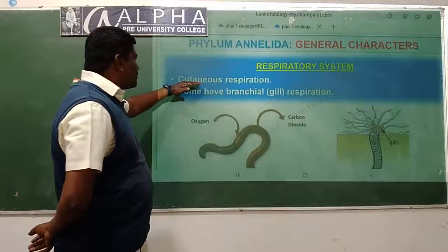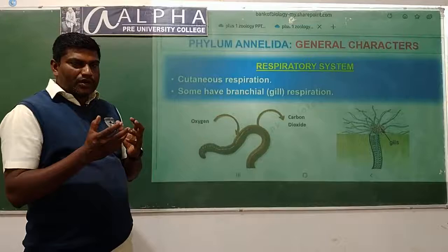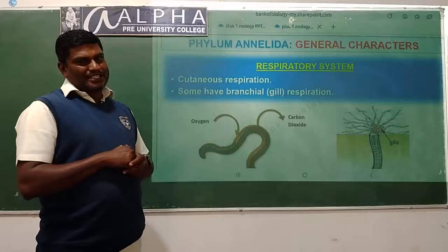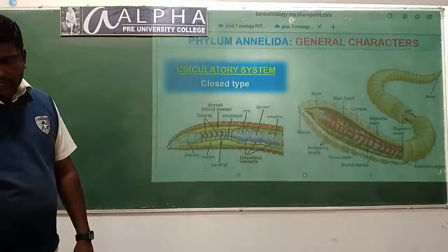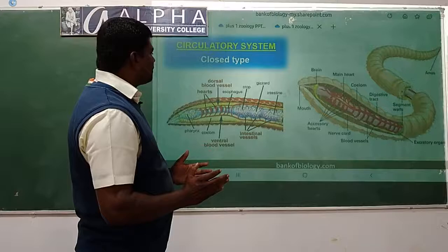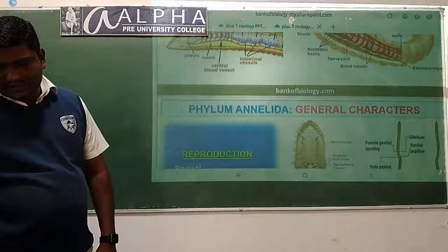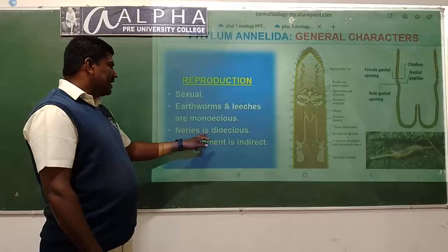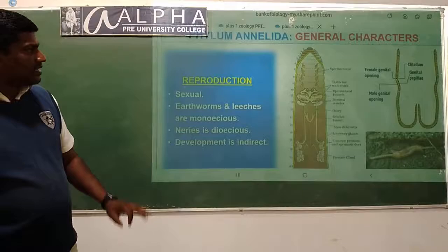Respiratory system: cutaneous respiration takes place - that means exchange of gases through moist skin. Some have branchial respiration, meaning gill respiration. Circulatory system: closed circulatory system due to the presence of hemoglobin, where blood flows in blood capillaries. Reproduction: sexual reproduction is seen. Earthworms and leeches are monoecious. Nereids are dioecious. Development is indirect.